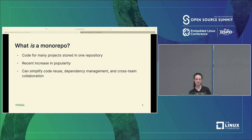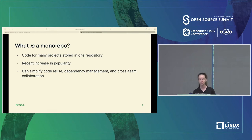Monorepos have become a lot more popular recently. A lot of large companies have been known for using them — Facebook, Google, and Uber are the big three examples that come to mind.